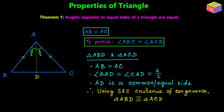Now that we have proved the two small triangles to be congruent, we can use the CPCT property of congruent triangles. CPCT stands for Corresponding Parts of Congruent Triangles. The CPCT property states that the corresponding parts of congruent triangles are equal — a very important property. When two triangles are congruent, their corresponding parts will be equal.